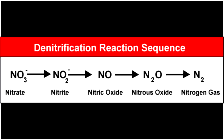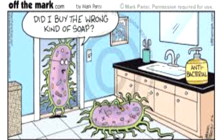Unlike nitrification, which converts ammonia and nitrite, denitrification converts nitrates — which is NO3 — into nitrogen gas, N2, which is removed from the aquarium. There are types of bacteria that drive both nitrification and denitrification.